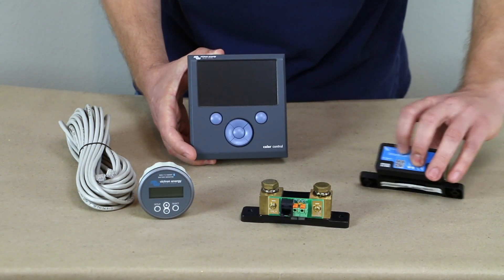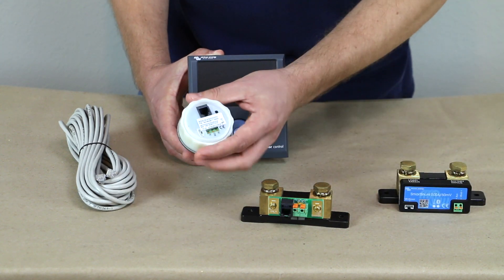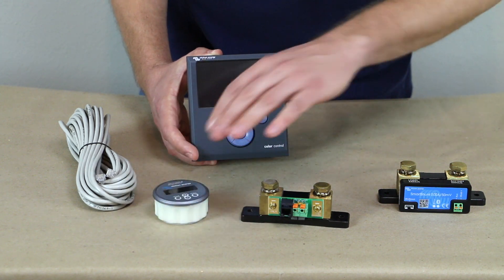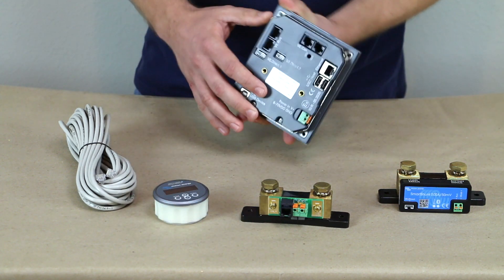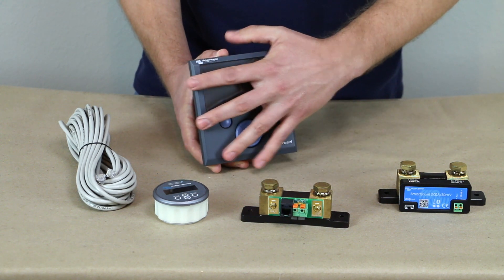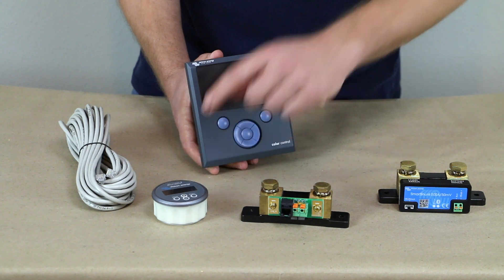I'll show you here, we have a VE direct port on the smart shunt and a VE direct port on the back of the BMV 712 screen. So you would run that VE direct cord to the back of your GX device, either a color control like this or they have the new Cerbo GX. But you're going to plug that battery monitor into here.